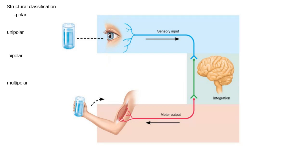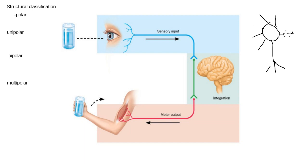Let's do a quick sketch. A typical multipolar neuron has a cell body, dendrites that collect information, and an axon that sends information away. A multipolar neuron has multiple extensions coming off of it — lots of things coming off the cell body.